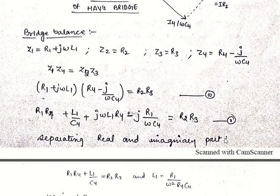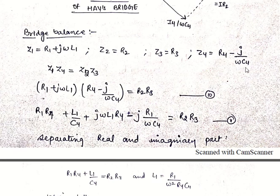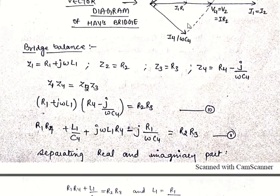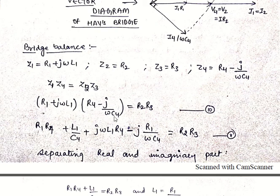Coming to the bridge balance condition: Z1 = R1 + jωL1, Z2 = R2, Z3 = R3, and Z4 = R4 − j/(ωC4), since the capacitance term gives a minus j in the numerator when we multiply and divide. From the bridge balance condition, Z1·Z4 = Z2·Z3.